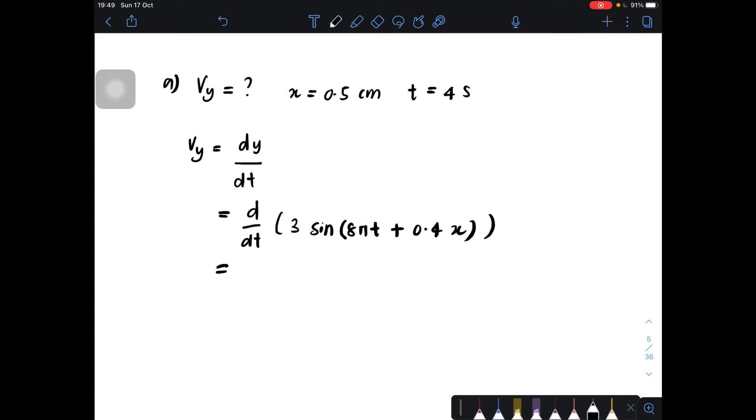So 3 times 8 pi, we will get it as 24 pi. And then differentiate sin will get cos. And then the rest remains the same. So this is the equation of vy we have now. Okay.